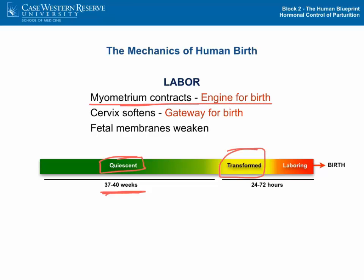The cervix, which is usually closed and rigid, begins to soften such that it can open and dilate and become the gateway for birth. And the membranes that surround the fetus begin to weaken, so that when the fetus is born, the membranes rupture to free the fetus.